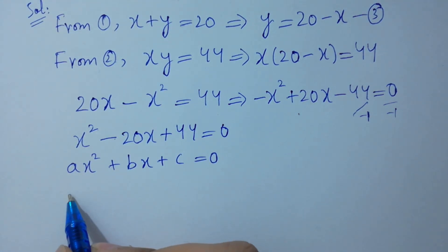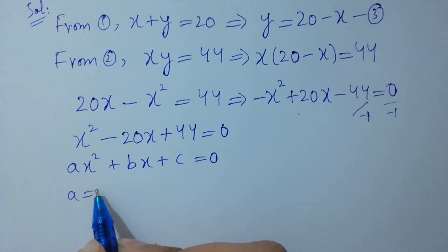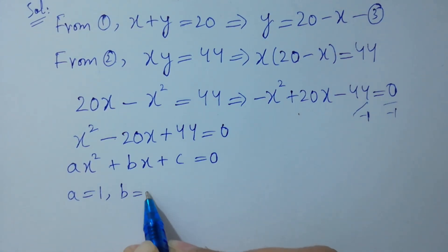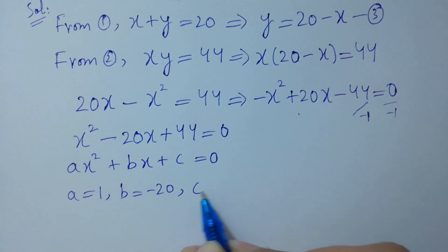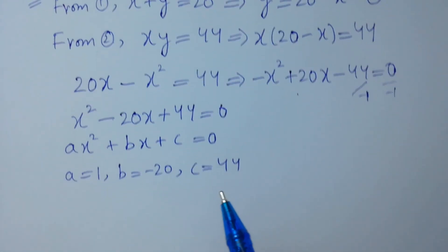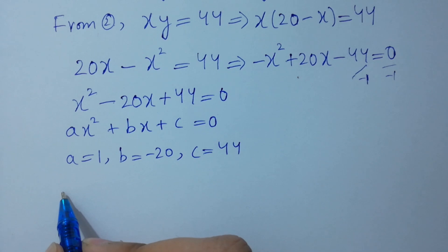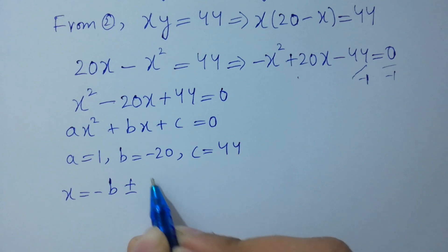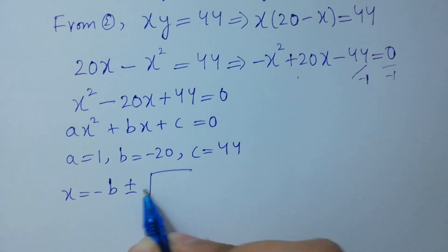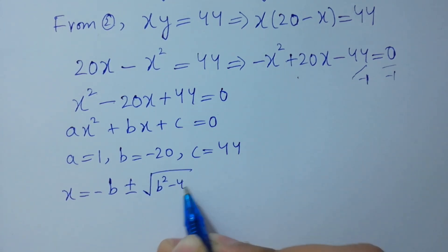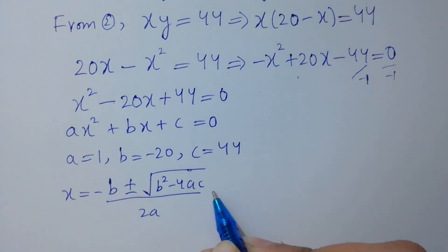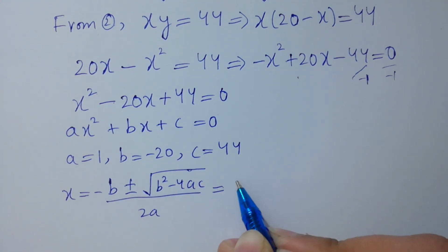Comparing, we have a equal to 1, b equal to minus 20, and c equal to 44. Applying the quadratic formula: x equal to minus b plus or minus square root of b squared minus 4ac, over 2a. Substituting the values: